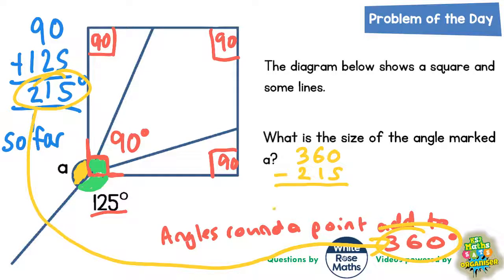So all we've got to do to get our final answer is 360, take away the 215, and whatever's left will be our missing angle for A. So let's do that. So 0 take away 5 we can't do, so borrow from the 6, 6 becomes a 5, the one we borrowed makes that into 10, 10 take away 5 is 5, 5 take away 1 is 4, 3 take away 2 is 1. So the final answer is that there's 145 degrees left, and it's that 145 degrees that must be angle A.